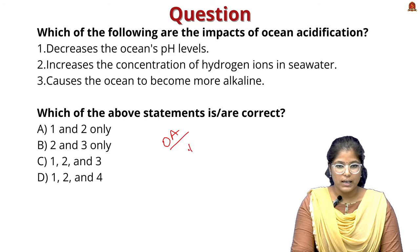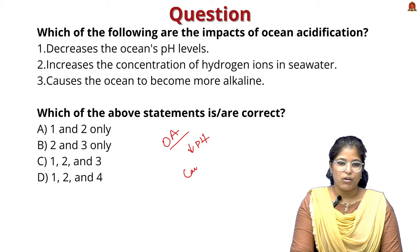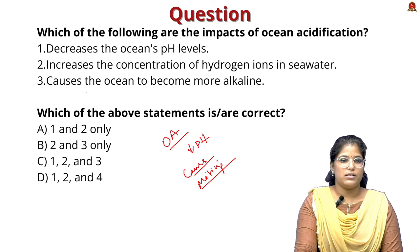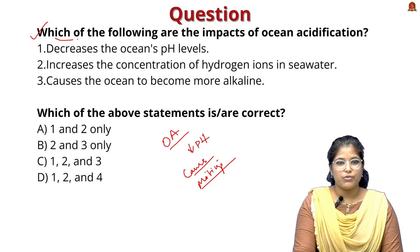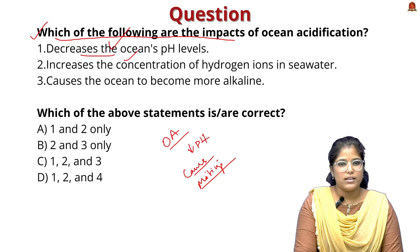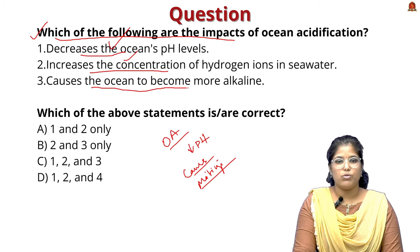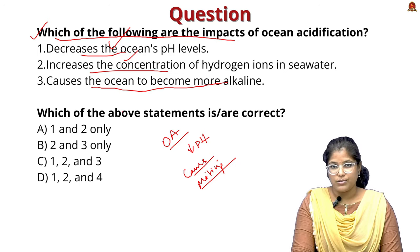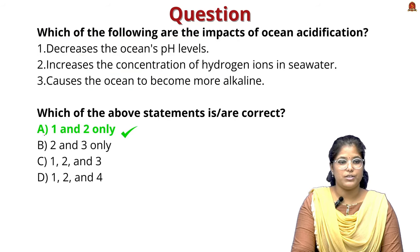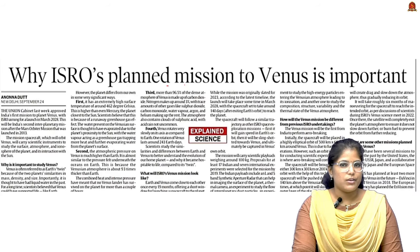In summary, ocean acidification is the decrease in ocean pH level. We covered its causes and mitigation measures. The practice question asks about the impacts of ocean acidification from three statements: first, decrease in ocean pH; second, increase in hydrogen ion concentration in seawater; third, oceans becoming more alkaline. The correct answer is option A — statements one and two.